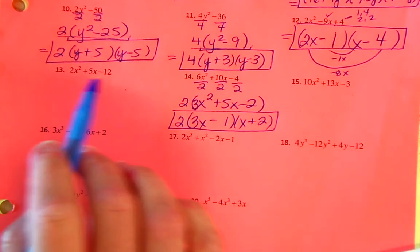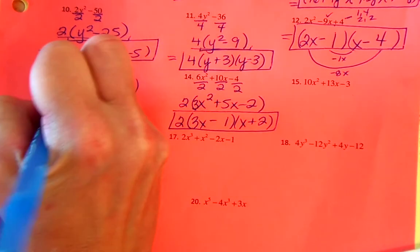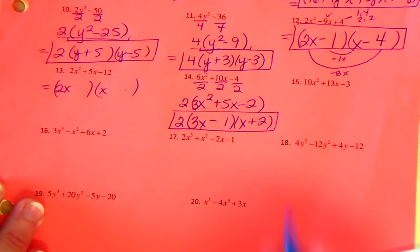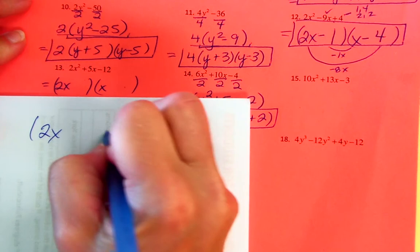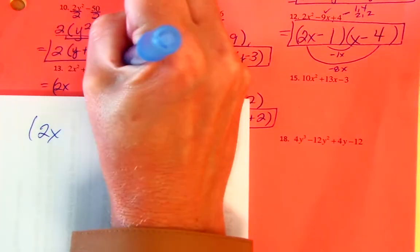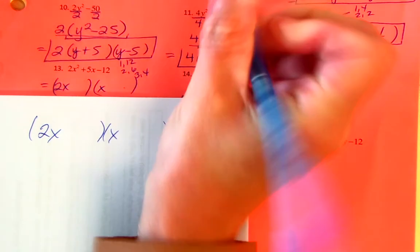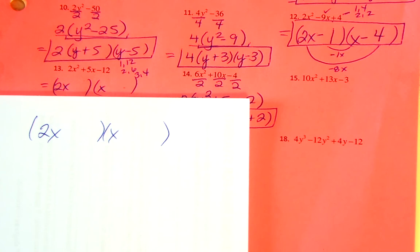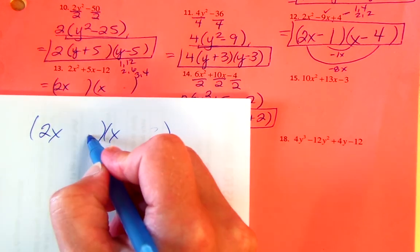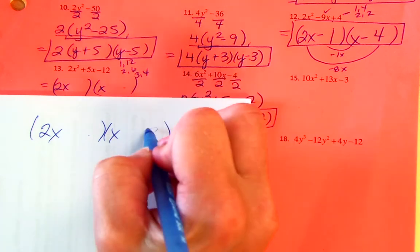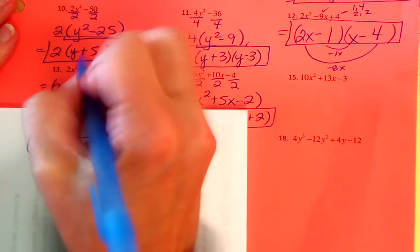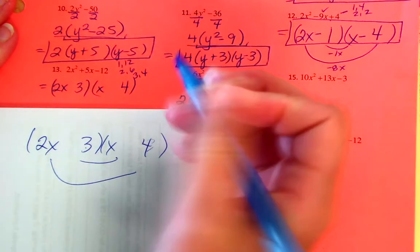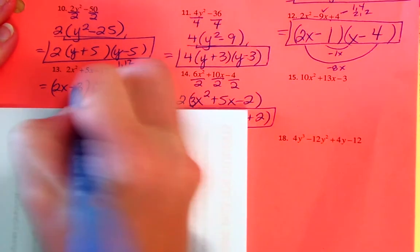Number 13 has no GCF, so we set up (2x)(x). On scrap paper: factors of 12 are 1 and 12, 2 and 6, 3 and 4. I need a 5 in the middle. Try putting 3 here: 6 and 4 — no. Try 4 here: 8 and 3 — 8 minus 3 is 5, good. So the 3 goes here and 4 there; the larger number is positive, making the outer product 8, and 8 minus 3 is 5.